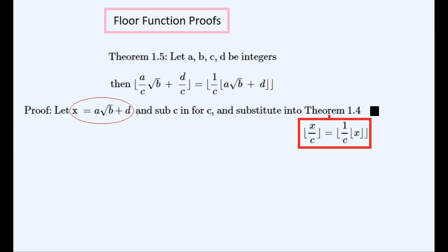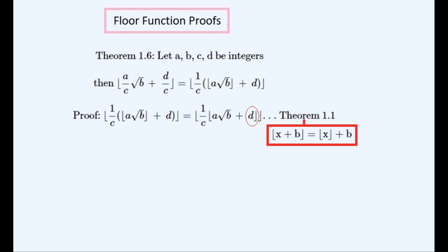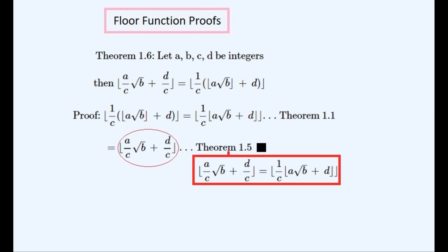And now to prove this last theorem which looks more messy and not obvious. We can use this first theorem to make the first step, bringing it inside the floor function. And then this second step is just a repeat of the last theorem that we've proven. This is an important theorem because I'll use it to find the continued fraction for the square root of any integer.